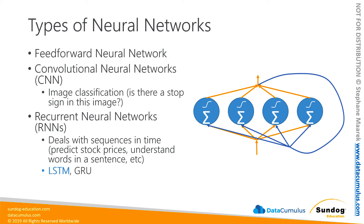Another kind is the recurrent neural network, or RNN. Recurrent neural networks are designed to deal with sequences in time. In addition to outputs of individual neurons being propagated upward to the next layer, they also propagate back to the same layer in the next iteration — modeling the effect of time passing as it's being trained. An RNN is appropriate for things like predicting stock prices or understanding words in a sentence where sequence is important. There are specialized kinds of RNNs including LSTM, which stands for Long Short-Term Memory Cell, and GRU, which stands for Gated Recurrent Unit Cell — a simplified version of LSTM. Remember that LSTM is a kind of recurrent neural network.